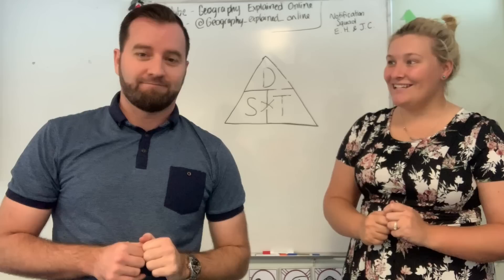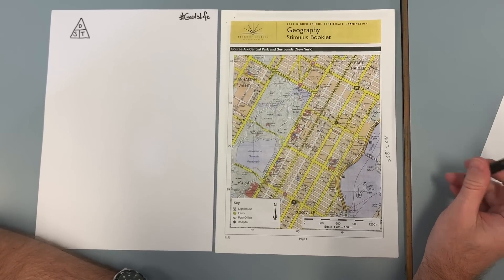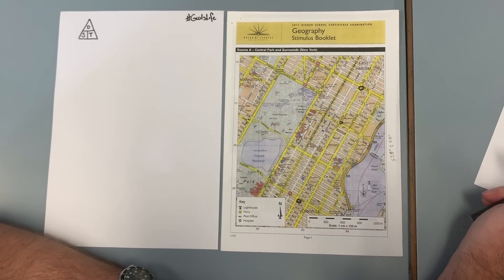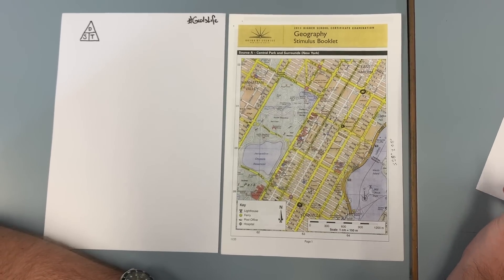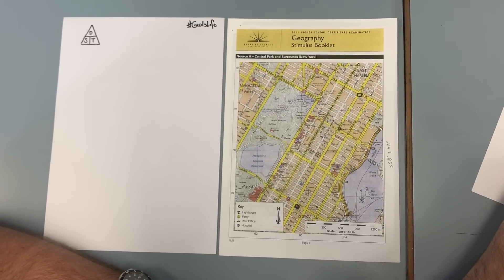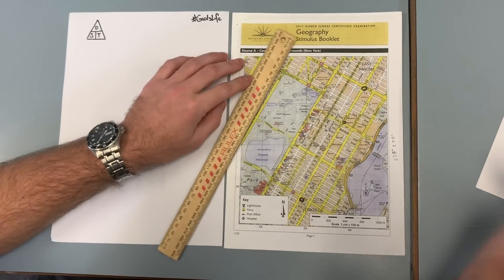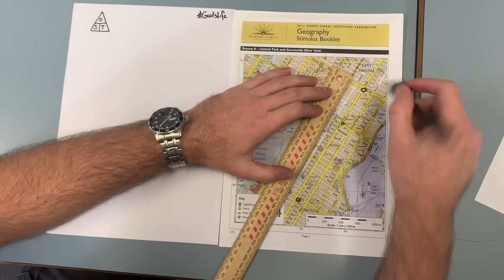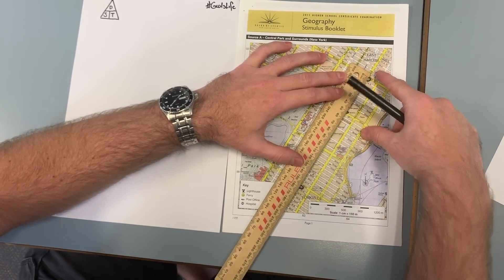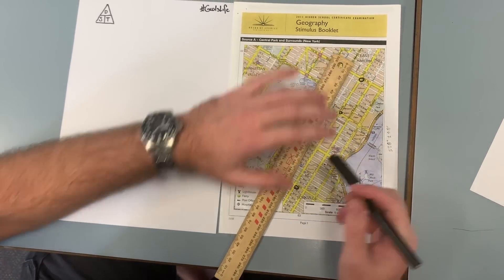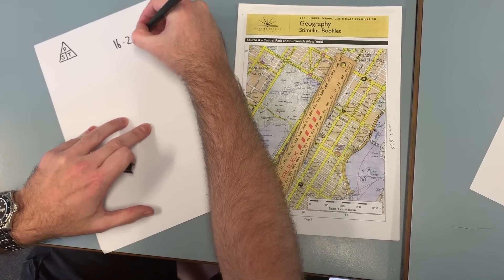We've got a HSC question we're going to go through now. Then Cizio is going to get his joggers on and we're going to do some practical examples as well. So here we've got our question from the 2011 HSC broadsheet. It's a pretty simple time-distance question — it gives you the distance and the speed, and asks us to calculate the time. The two points given in the question are basically this intersection to that intersection, so we put our ruler on each and find the distance between the two is 16.2 centimetres.